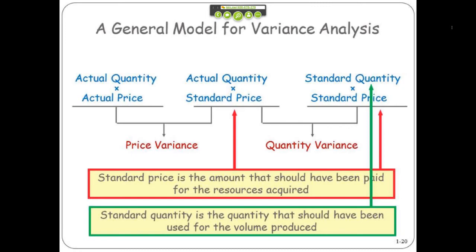This is the difference between your standard quantity and your actual quantity, gives you your quantity variance. And the difference between your actual price and your standard price gives you your price variance. That's the general model of what you do as you peel the onion.